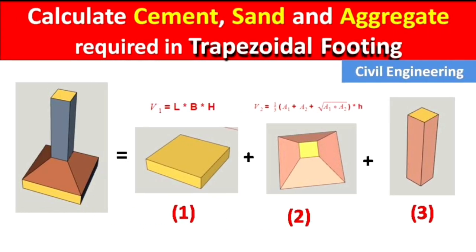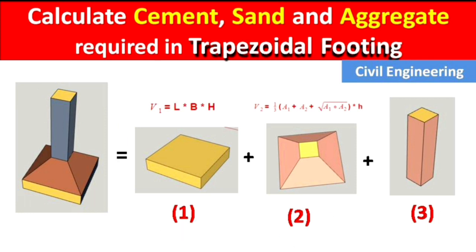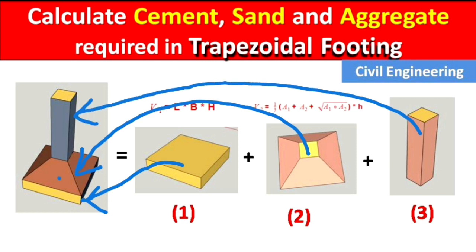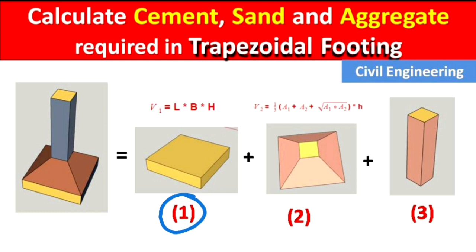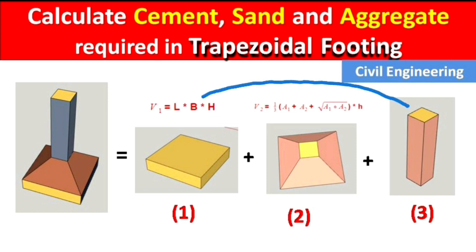The trapezoidal footing can be divided into three parts: Part 1 is the lower cuboid base, Part 2 is the truncated pyramid in the middle, and Part 3 is the column above. We will use separate formulas to calculate the volume of each part — V1 = L × B × H for the cuboid, and the truncated pyramid formula for Part 2 and the column.